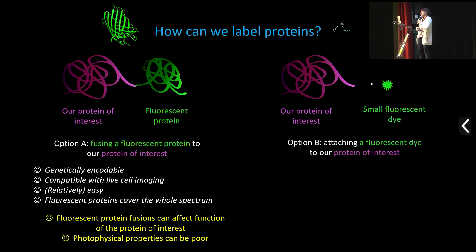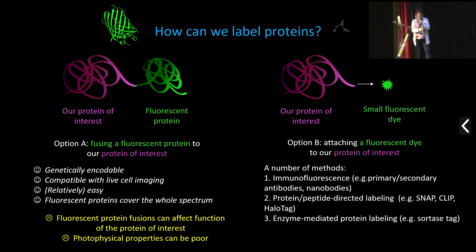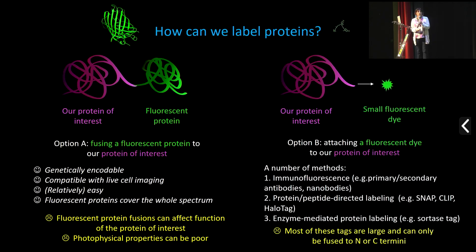The challenge is how to attach small fluorescent dyes to our protein of interest. Depending on whether you're doing live cell or fixed cell labeling, you have several options: you can use immunofluorescence with antibodies or nanobodies, different types of tags such as SNAP, CLIP, and HaloTag, or enzyme-mediated tags like a sortase tag. Most of these again have their advantages and disadvantages, but what most have in common is that they are also relatively large — some even larger than GFP.